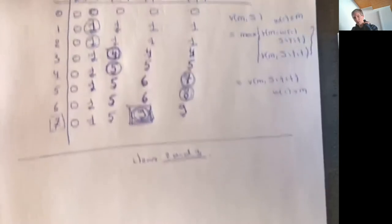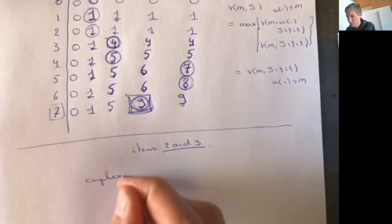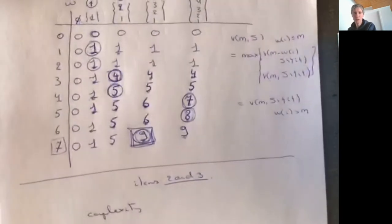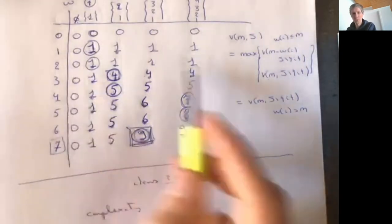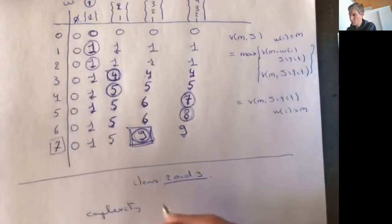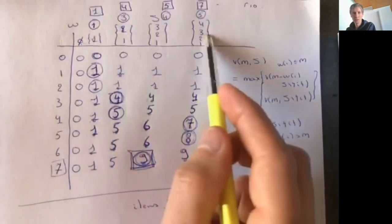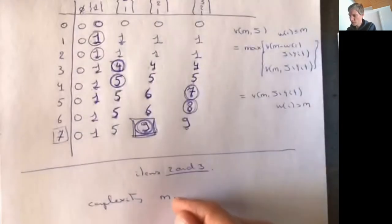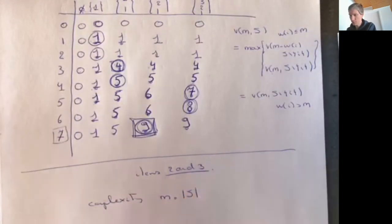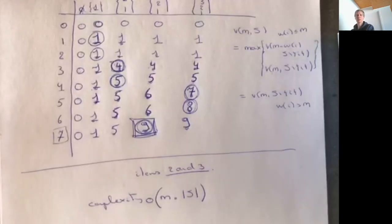Let's look at complexity. To compute the entire table you fill in m rows, and for each row you fill in a number of columns depending on the number of items, so the total complexity is on the order of m times |s|.